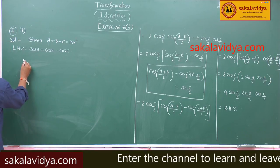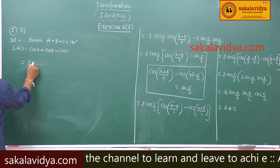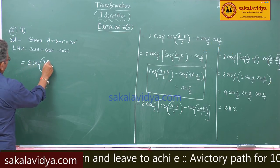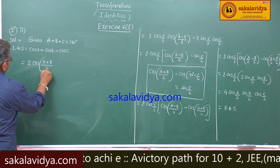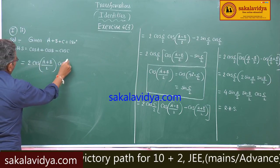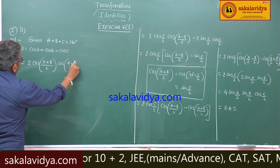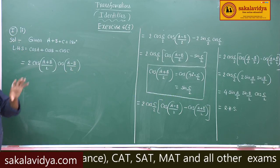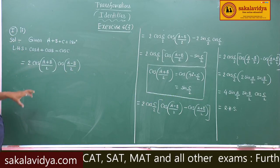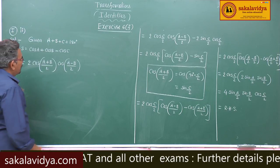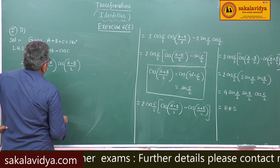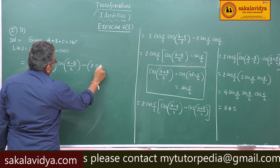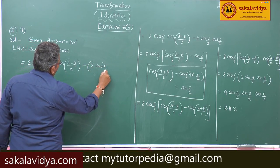Cos a plus cos b is equal to 2 cos of (a plus b)/2 times cos of (a minus b)/2, since both are cosines. Now, one question will arise: how to change the cos c value. So, better to write cos c in terms of minus of 2 cos²(c/2) minus 1.